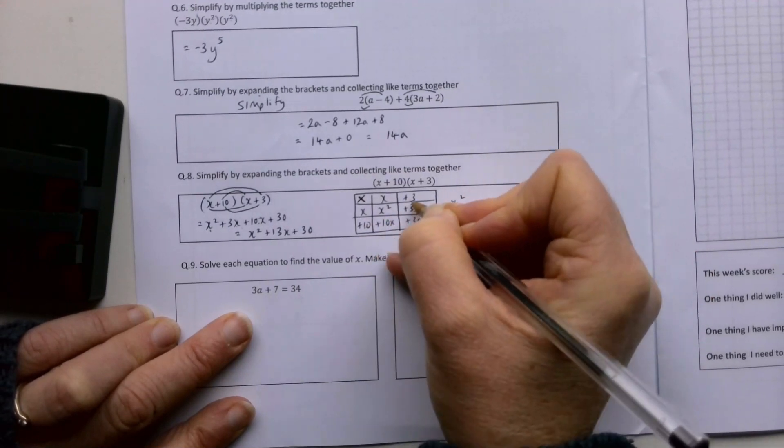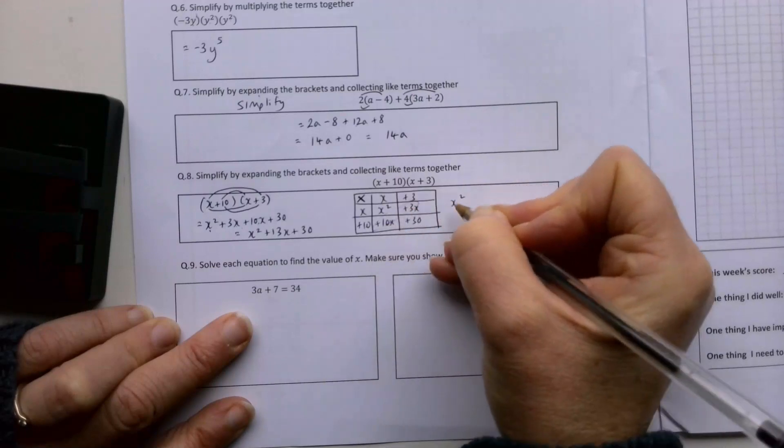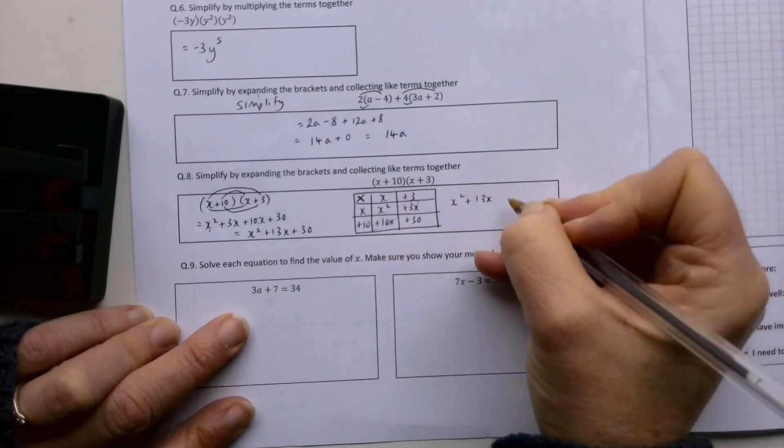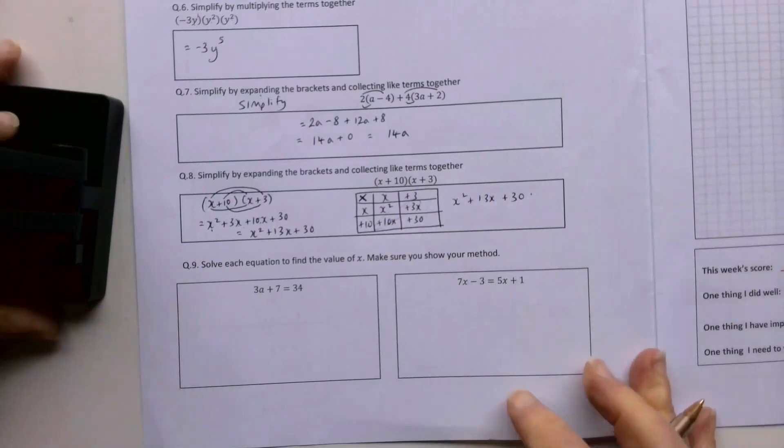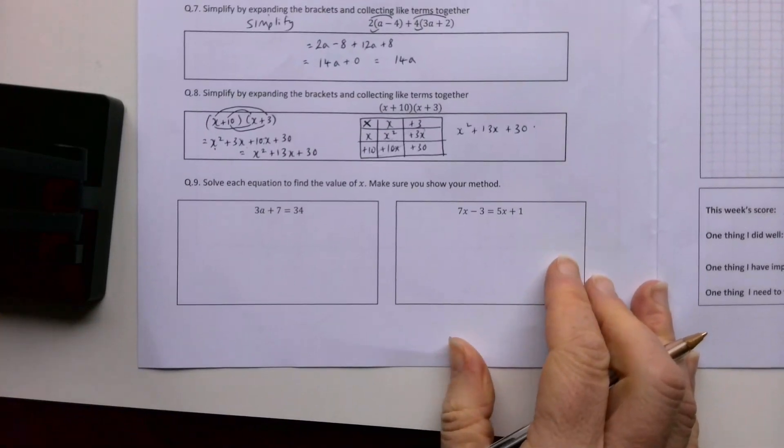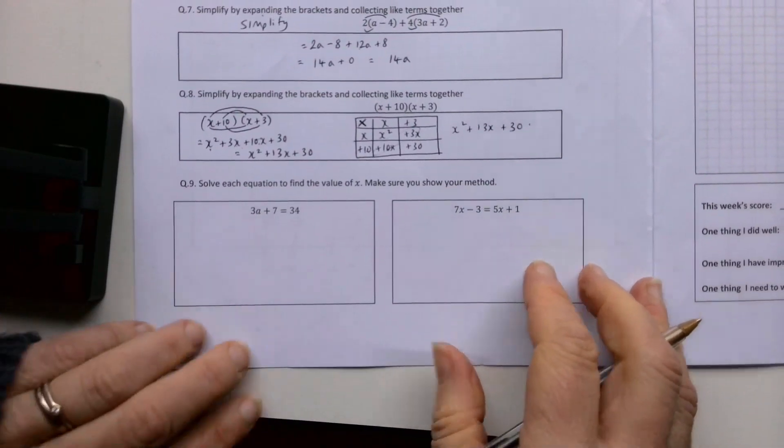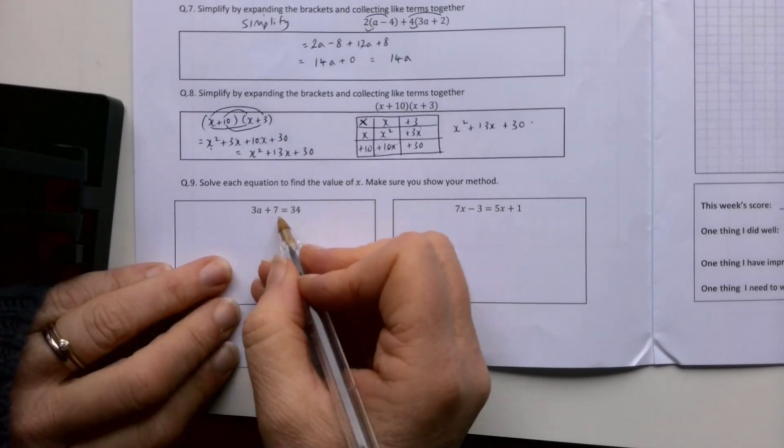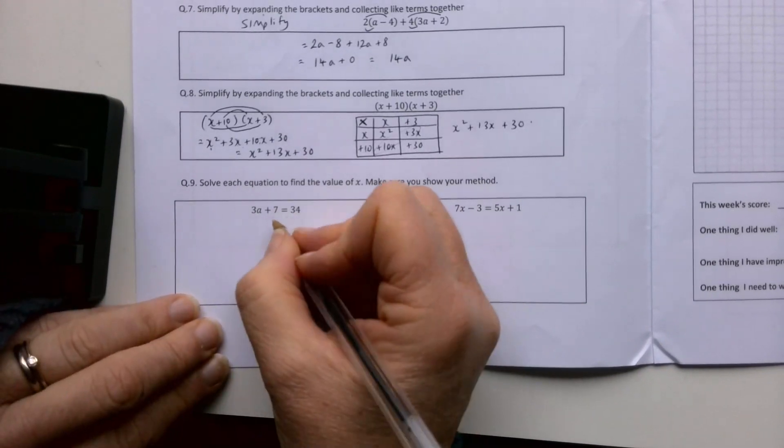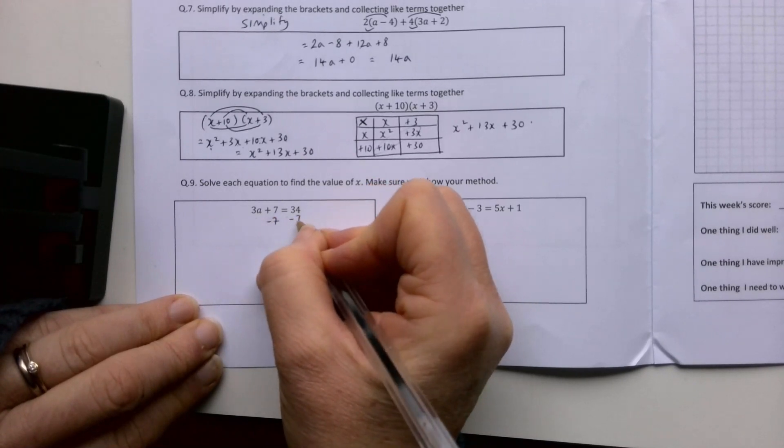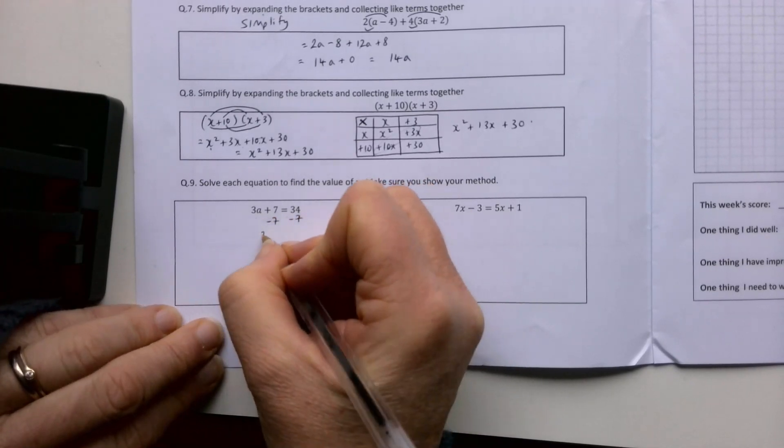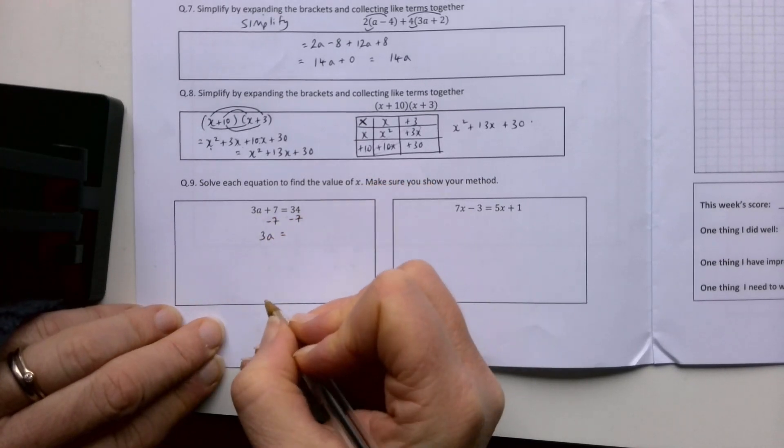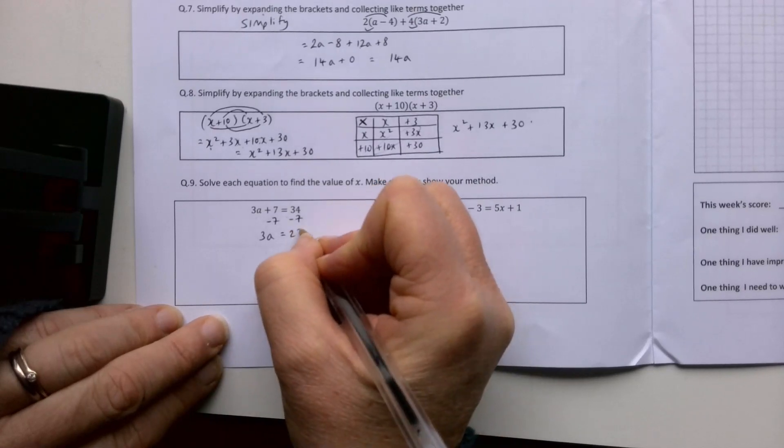Solve each equation to find the value of x - in this case it's a actually. So 3a plus 7 equals 34. I'm going to subtract 7 from both sides because I want a's on one side and numbers on the other. So 3a equals 27. Divide by 3, a equals 9.